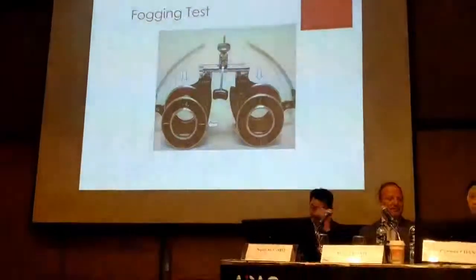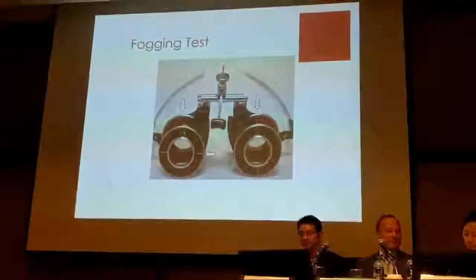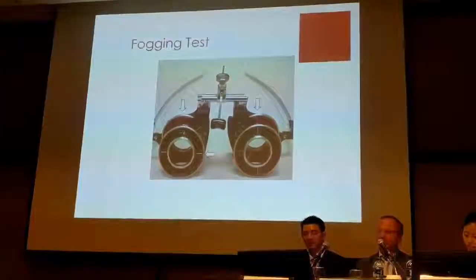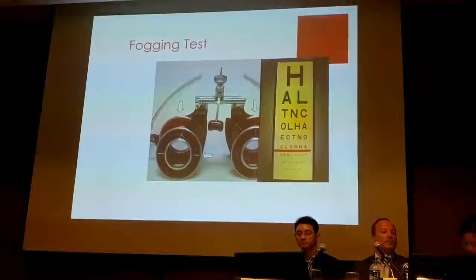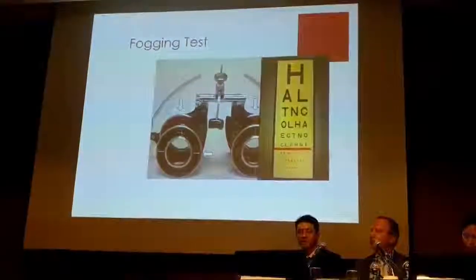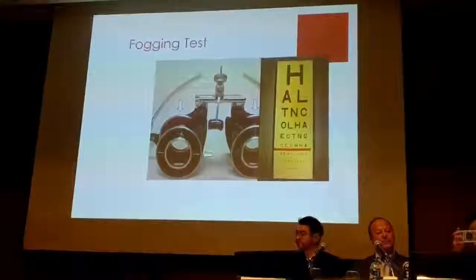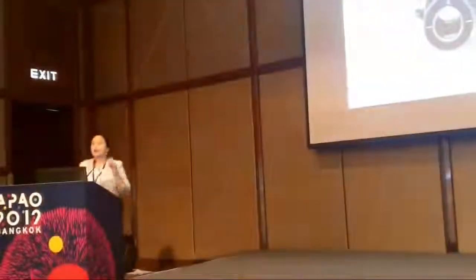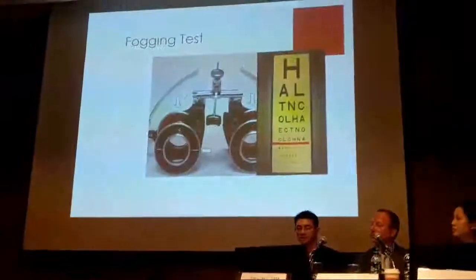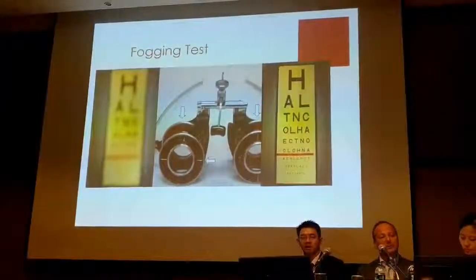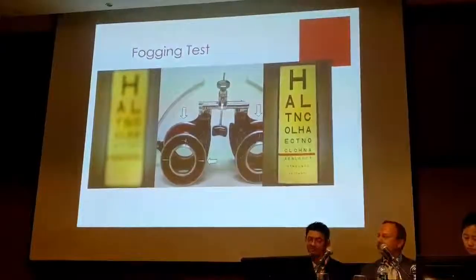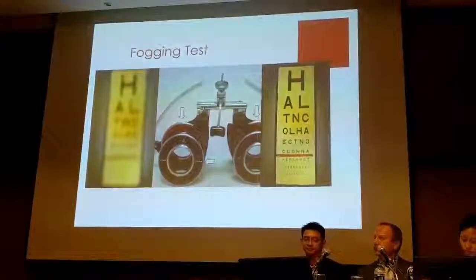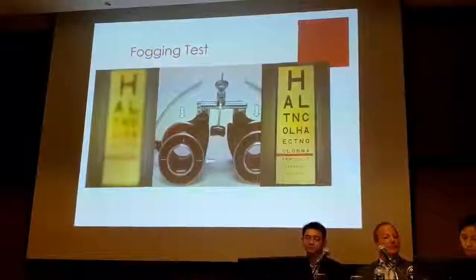Another test I use is the fogging test. I have a plus four and minus four cylinder. Initially they are lined up parallel to each other, making it effectively a planar lens — the patient sees beautifully. I then position myself on the side of the alleged non-seeing eye and slowly rotate one cylinder on the good eye to 90 degrees. I tell them to keep reading down the chart. As they do, I'm slowly fogging the good eye, so they are actually reading out of their bad eye without realizing it.